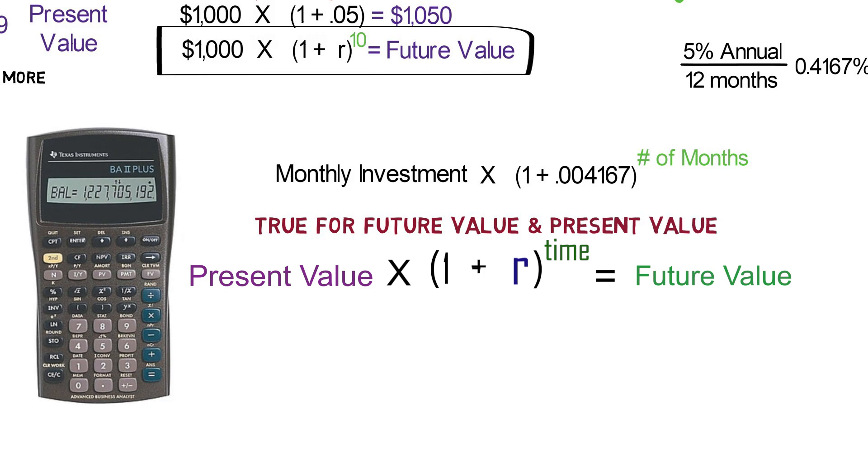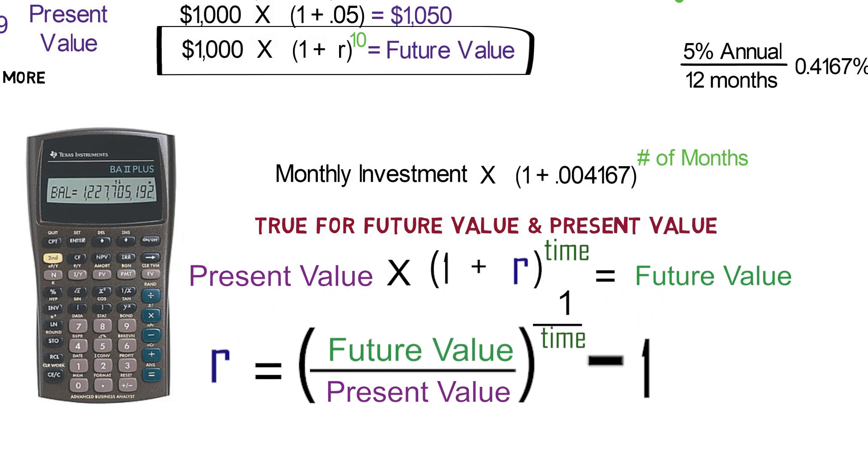Now, if you flip this formula around a bit, you can see what R needs to be to achieve a certain goal. So, if you have $10,000 today, and you needed to grow to $20,000 in, let's say, 5 years, well, you plug that in, and then you can see that your calculation says that you need to return 14.87% a year to get to your $20,000 goal within 5 years. And those are just a few examples of how people can utilize the time value of money.